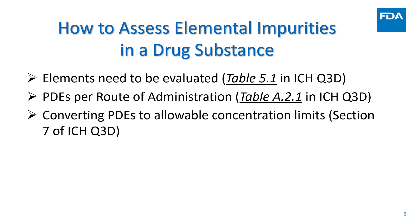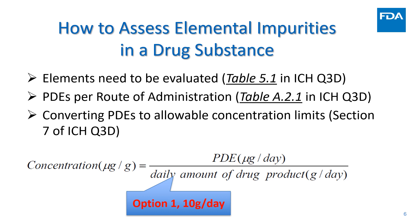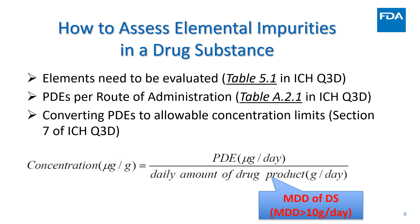Section 7 talks about converting the PDEs to concentration limits using a formula. Q3D provides several options. Option 1 is a simplified approach that uses 10 grams per day as the daily amount of a drug product. Usually, when we evaluate the elemental impurities in a drug substance, we use Option 1. However, if the maximum daily dose (MDD) of a drug substance is higher than 10 grams per day, we recommend the DMF holder to use the MDD instead of the daily amount in the calculation.